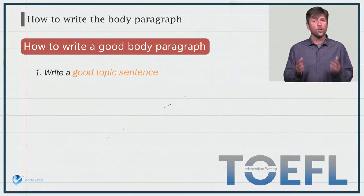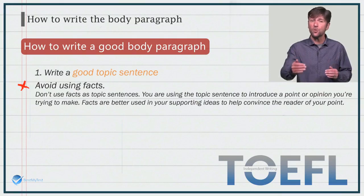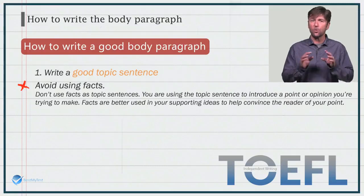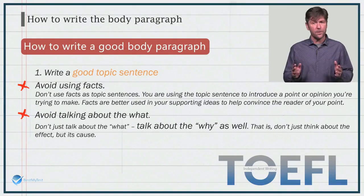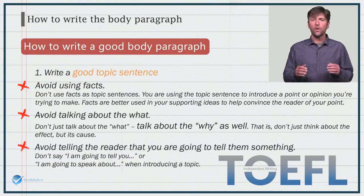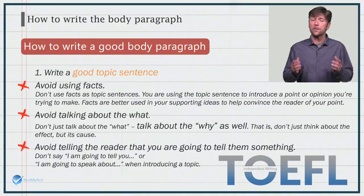Also, avoid the following when writing the topic sentence. Avoid using facts — don't use facts as topic sentences. Remember, you're using the topic sentence to introduce a point or opinion you're trying to make. Facts are better used in your supporting ideas to help convince the reader of your point. Avoid talking about just the 'what' — talk about the 'why' as well. That is, don't just think about the effect but its cause. Avoid telling the reader that you're going to tell them something. For example, don't say 'I'm going to tell you' or 'I'm going to speak about' when introducing a topic. The reader already knows that you're the writer — it's irrelevant to say this.